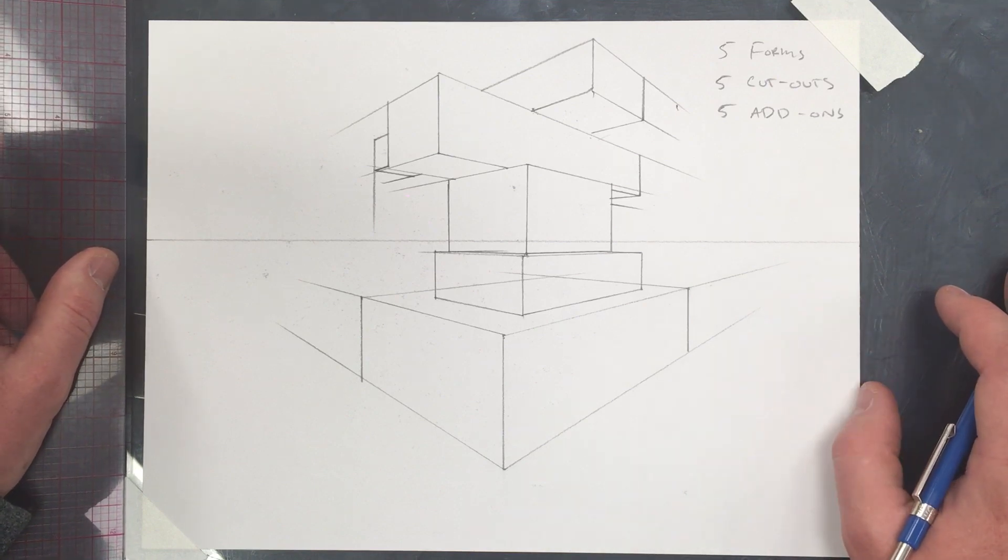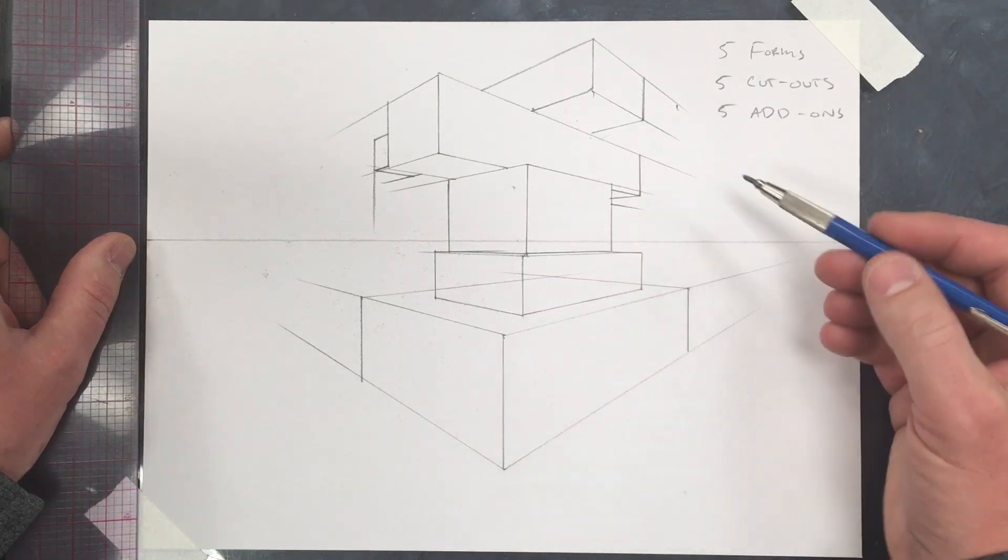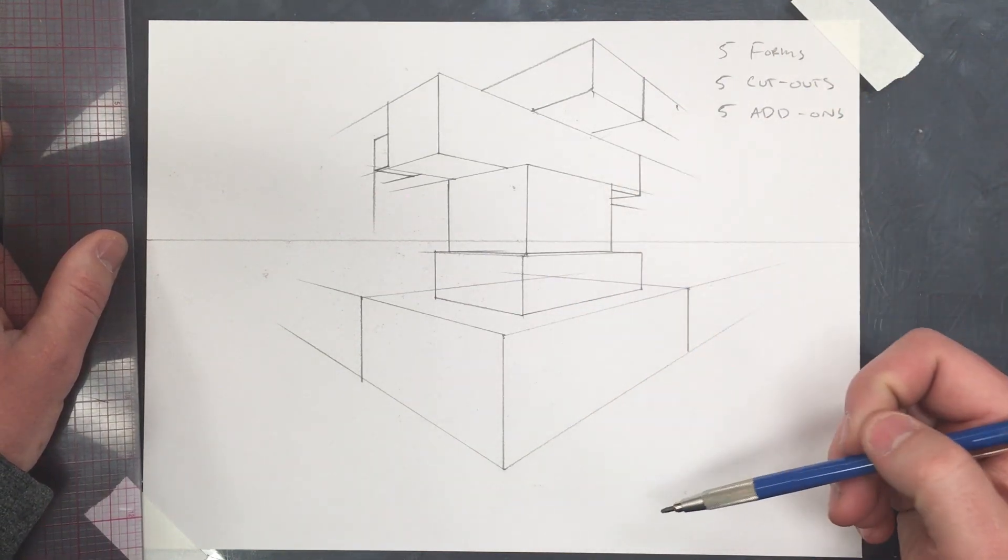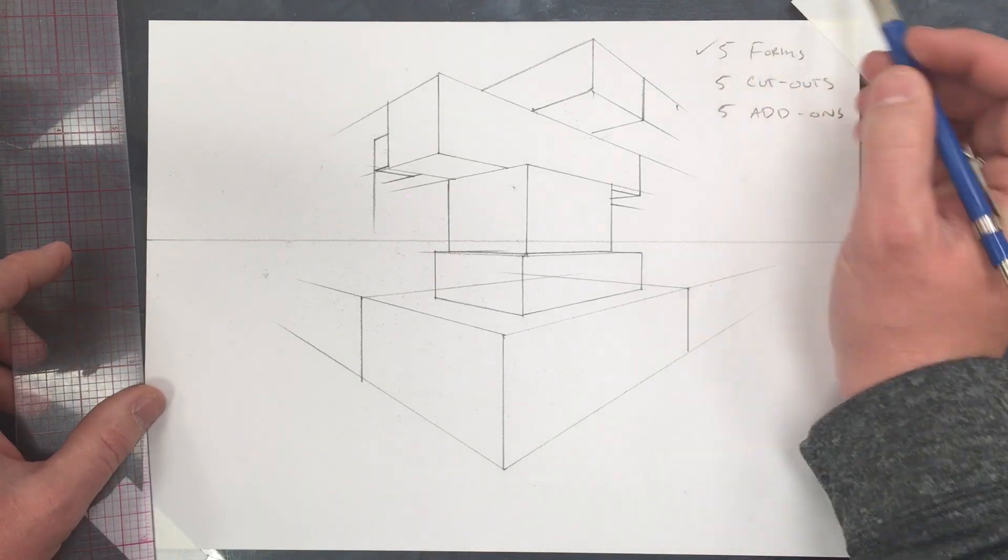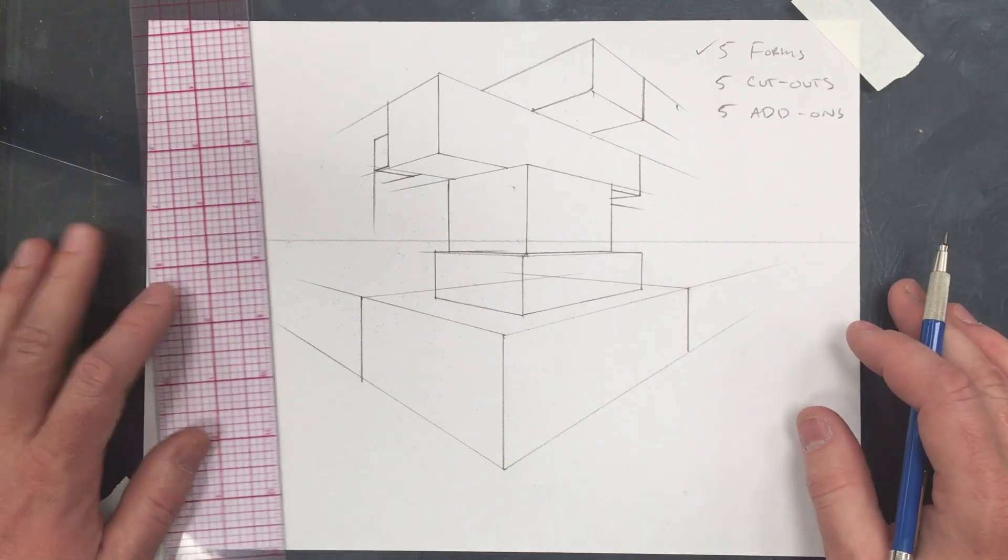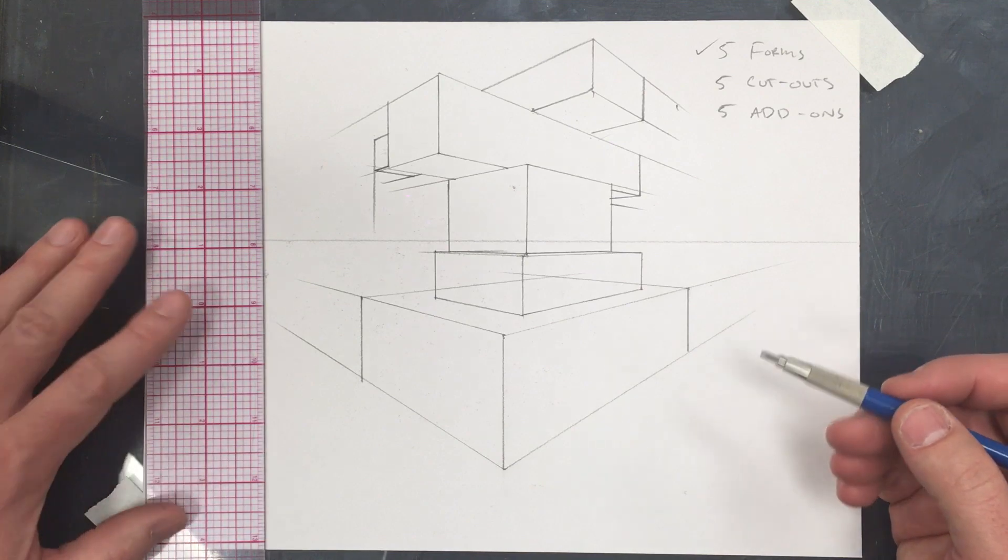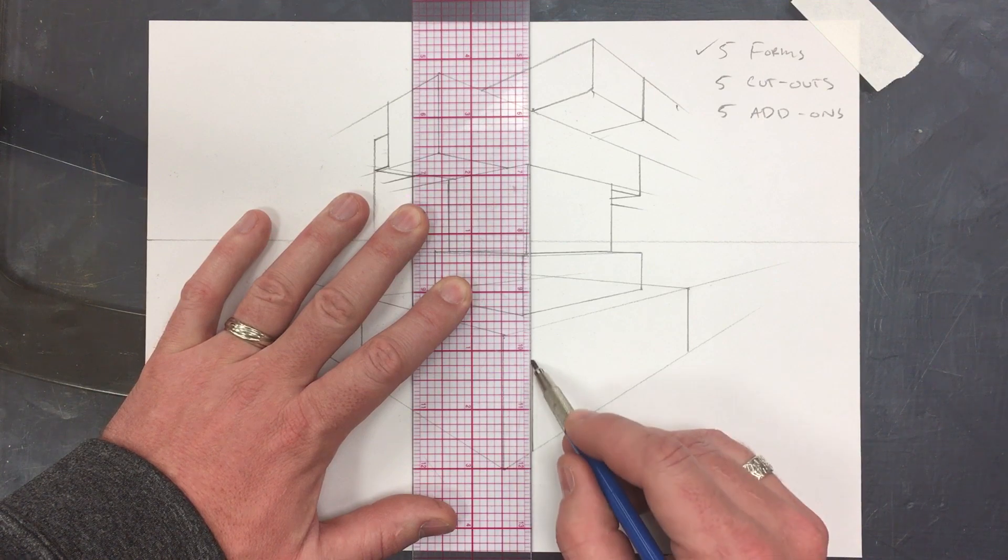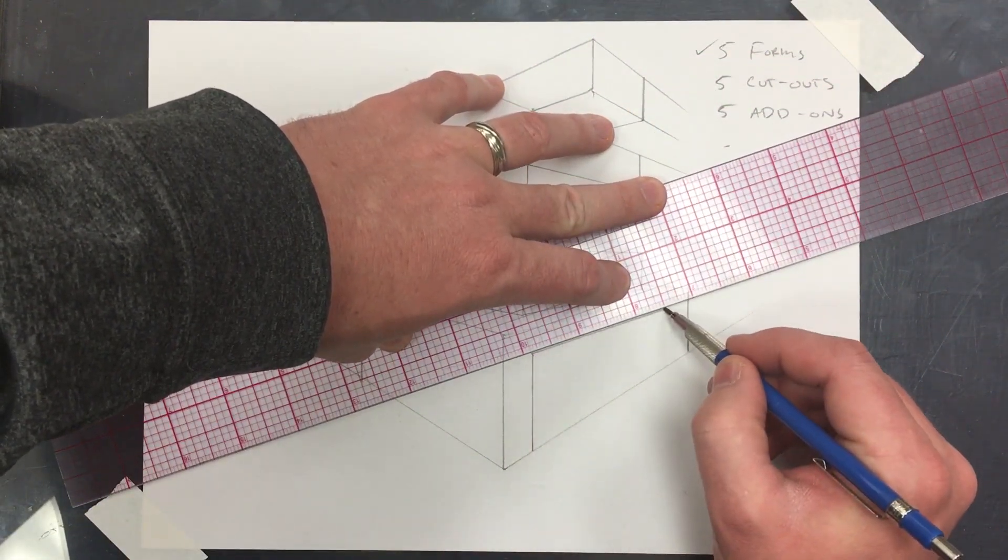We'll talk about that in a later video, but for now, this is simply this assignment, having five forms stacked up. So, we've got that all checked off. Five cutouts. A cutout is simply now removing a piece of one of these blocks, and kids like to have representational ideas.